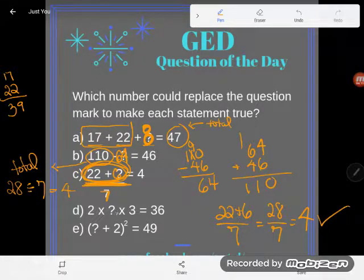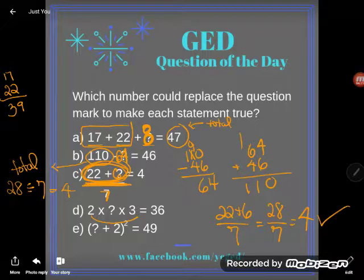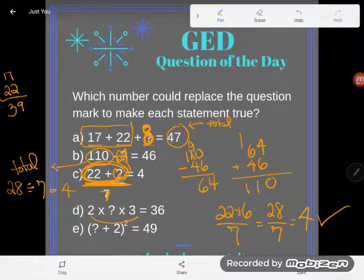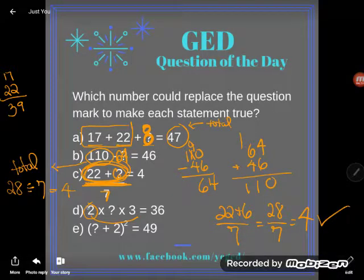Okay, D, I'm saying 2 times something times 3 is equal to 36. Now, I hope you guys know, it's known as the associative property. I can multiply, I can group these in any order I want. So if I want to just start by multiplying 2 and 3 together, I can. So 2 times 3 is 6. So I'm really saying 6 times some number.